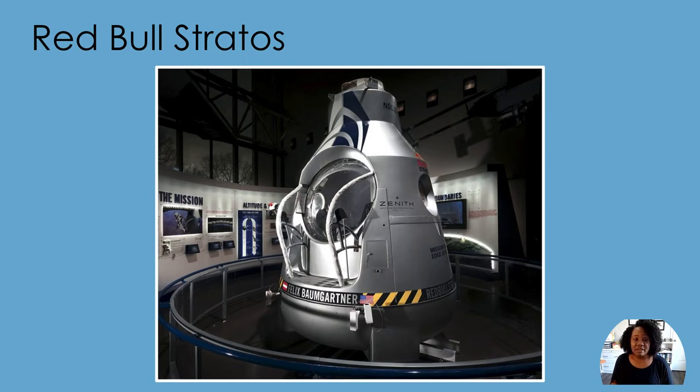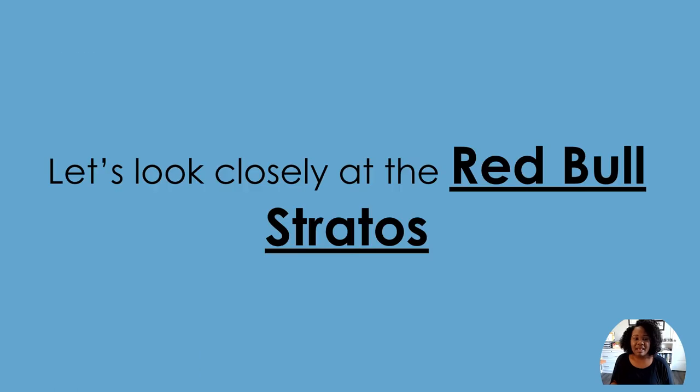Once in the stratosphere, skydiver Felix Baumgartner jumped out of the Stratos, fell through the atmosphere, and then parachuted to earth. Let's look closely at the Red Bull Stratos.